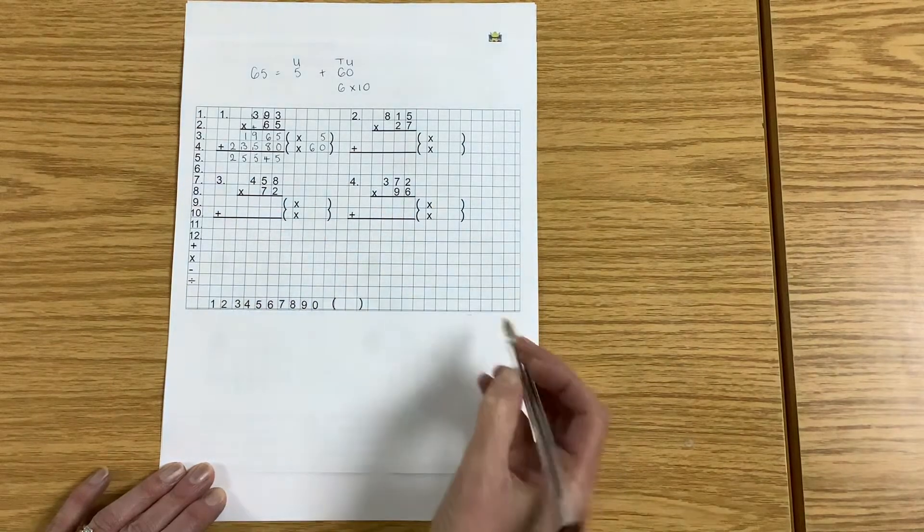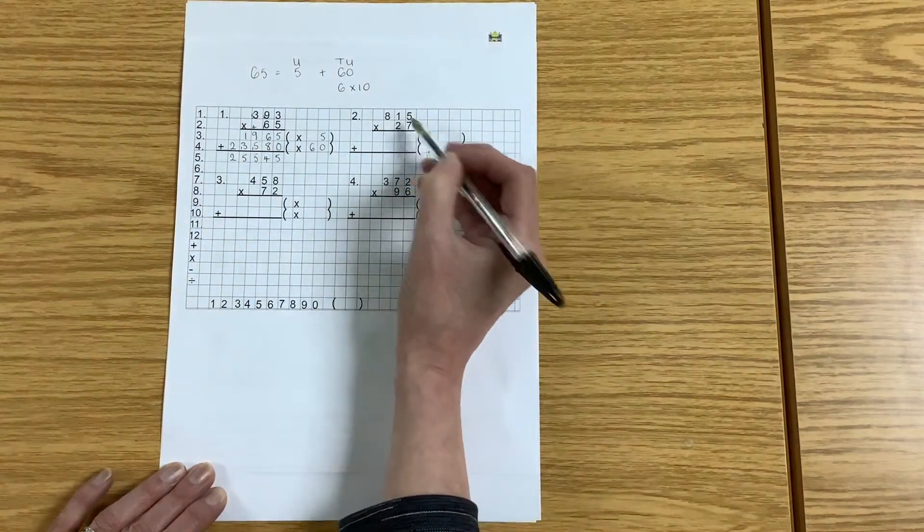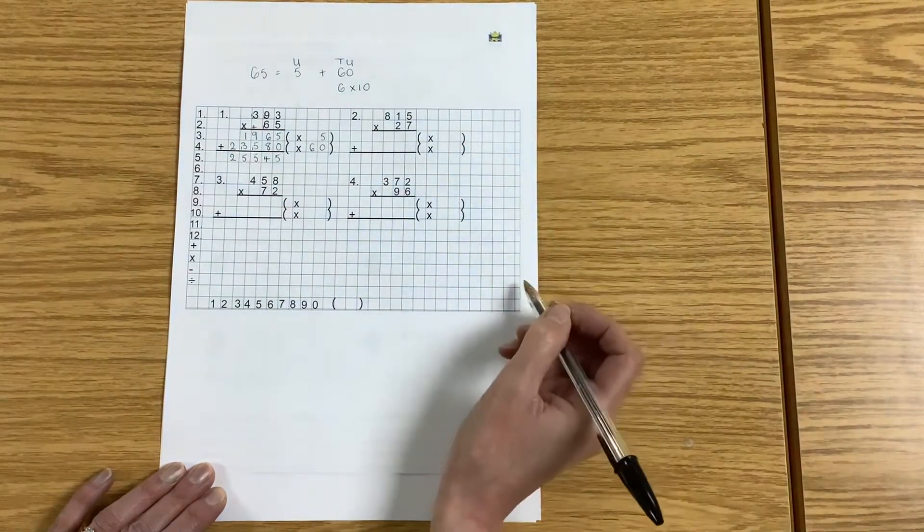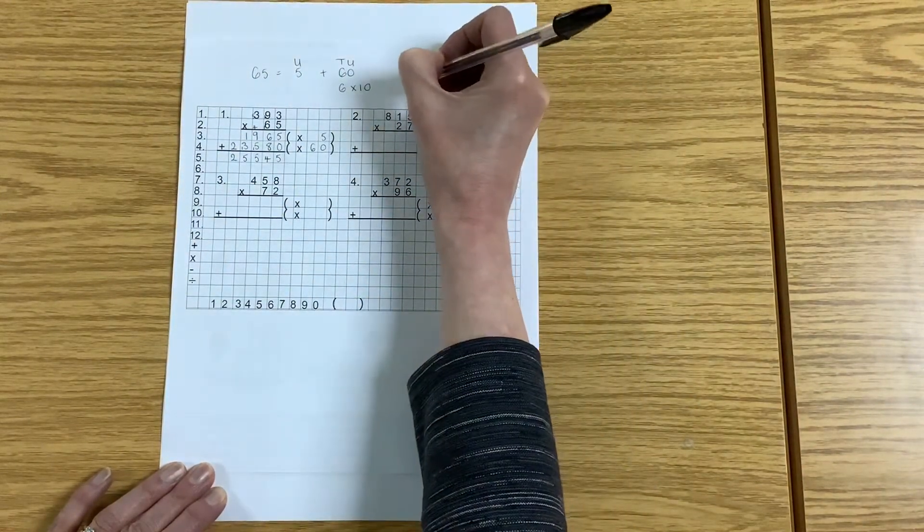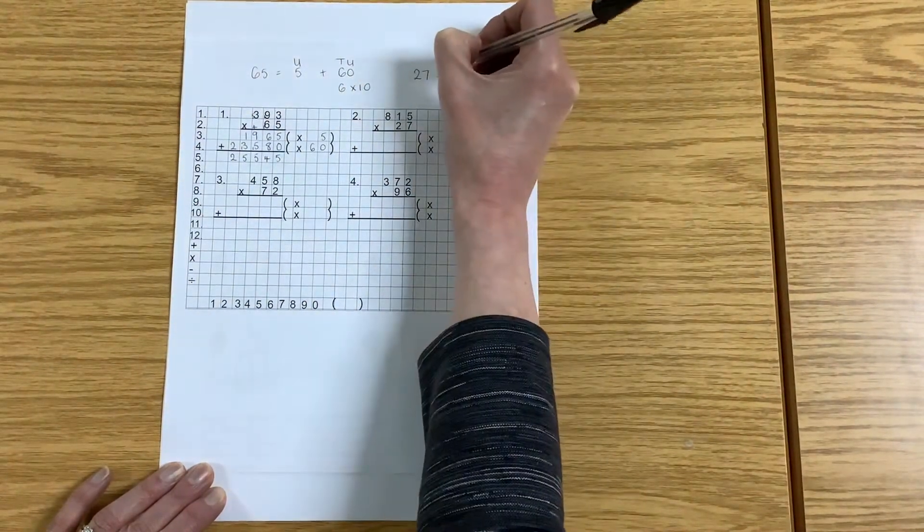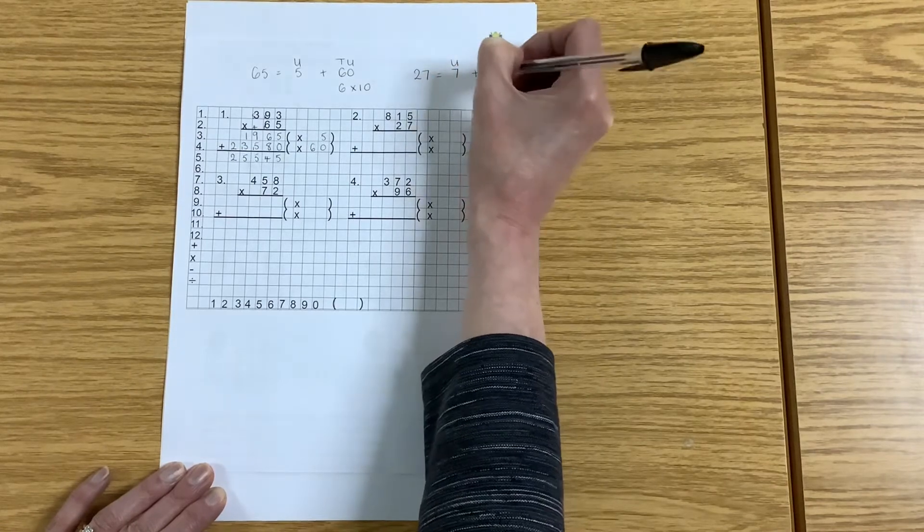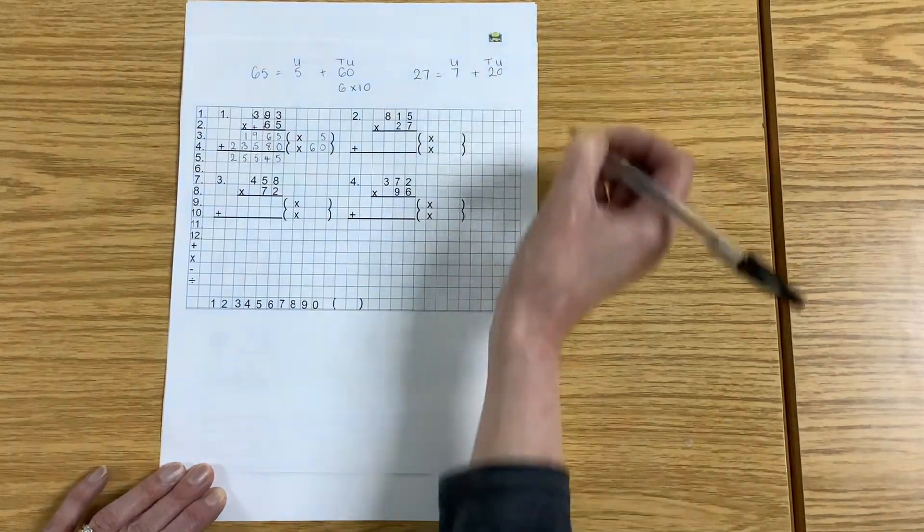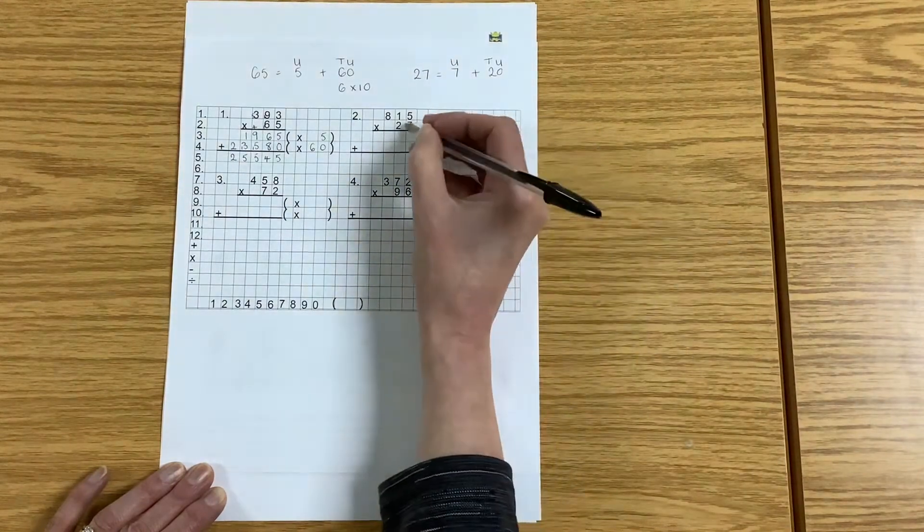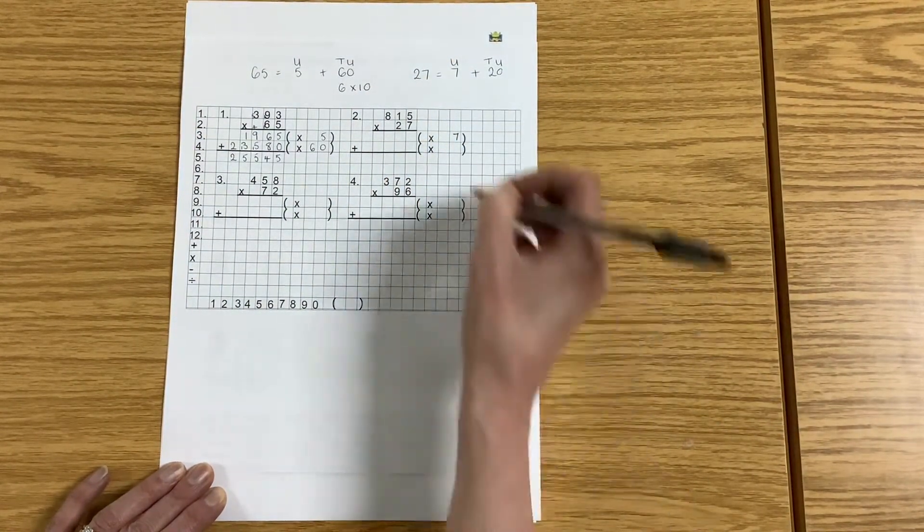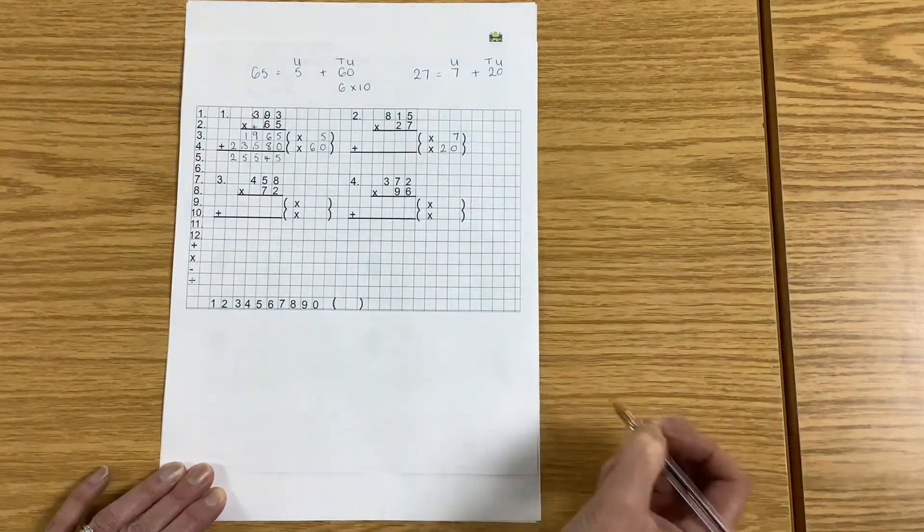Let's do one more question together as revision. In this question I'm taking my 815 and multiplying it by 27. So again I'm going to take my 27 and break it down into two parts: my units number which is 7 and my tens number which is 20. I'm going to multiply by the units number first, the 7, and then by the 20.